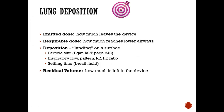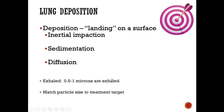For lung deposition, we talk about the admitted dose—how much leaves the device—and the respirable dose—how much actually reaches your lower airways. Deposition just means landing on the surface. Factors that control how well that happens include particle size, inspiratory flow, breathing pattern, respiratory rate, I:E ratio, settling time (which is essentially a breath hold), and residual volume—how much is left in the device when you're done. There are three deposition mechanisms: inertial impaction, sedimentation, and diffusion.